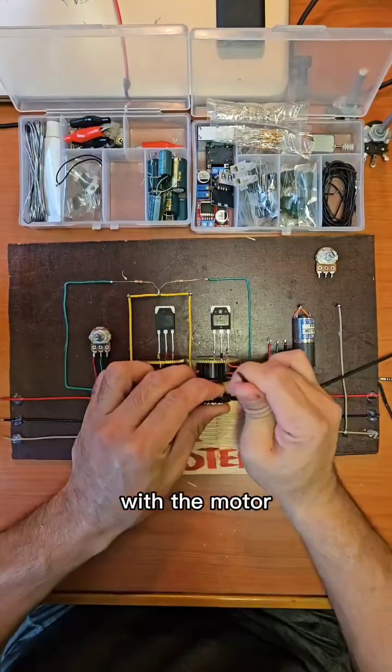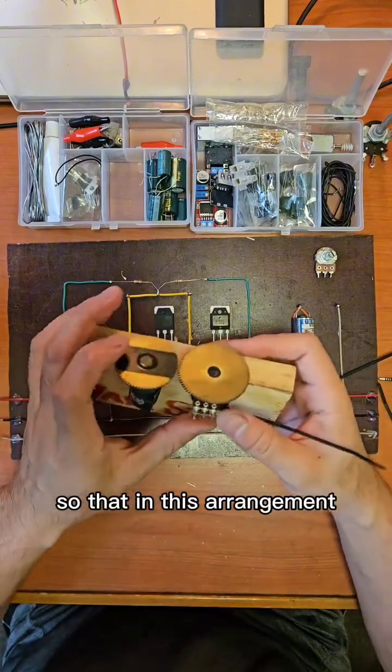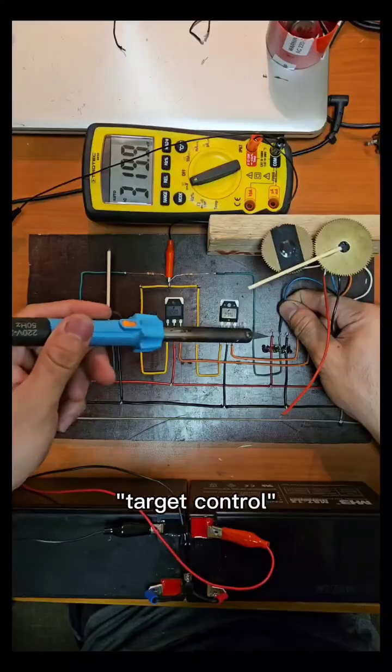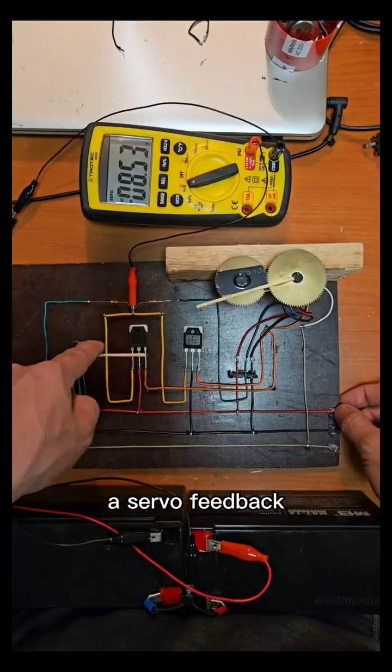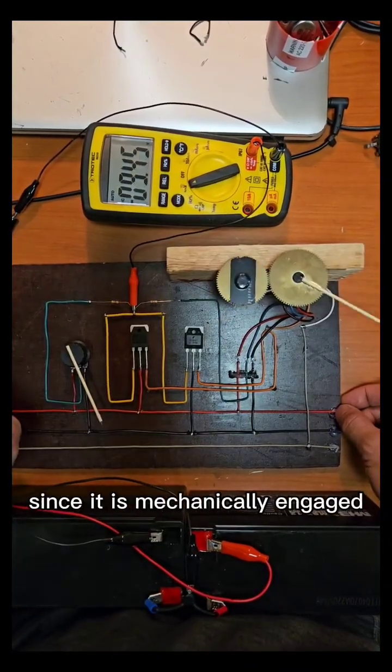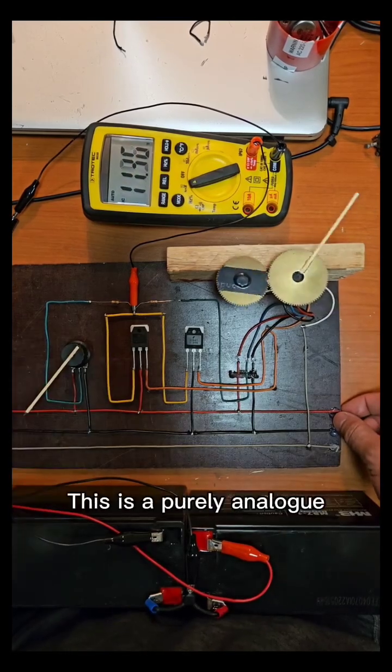This second pot will be mechanically engaged with the motor, so in this arrangement we can achieve target control or position control. This is now called servo feedback since it is mechanically engaged to the motor.